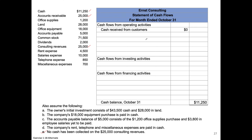Looking at expenses: how much cash did they pay to employees? The salaries expense was $10,000, but employees didn't receive all of that in cash. Out of the $5,000 accounts payable balance, $3,800 represents amounts not yet paid to employees. So out of the $10,000 that employees earned, they were paid all in cash except for $3,800. That means $10,000 minus $3,800 gives us $6,200 paid to employees — a cash outflow shown in parentheses.